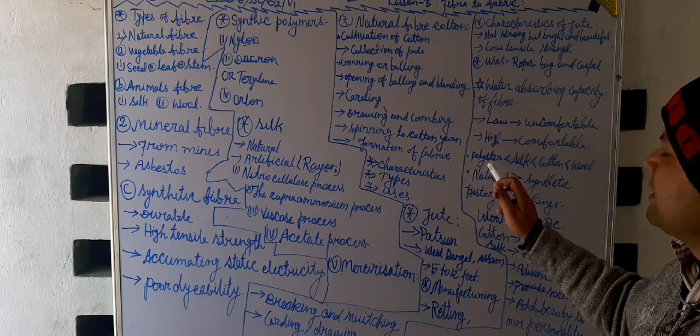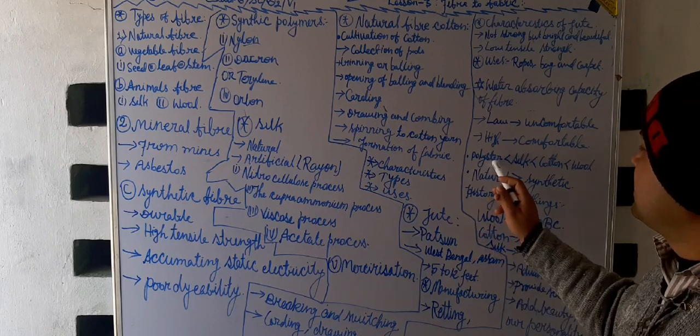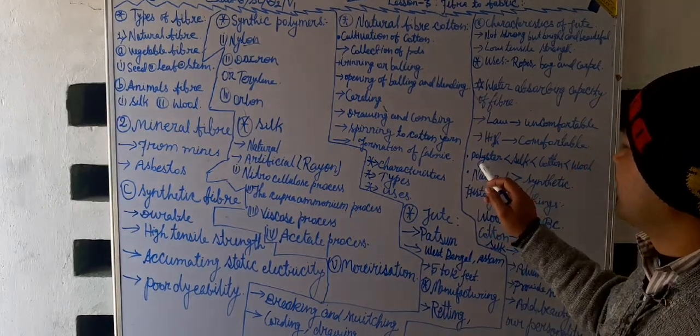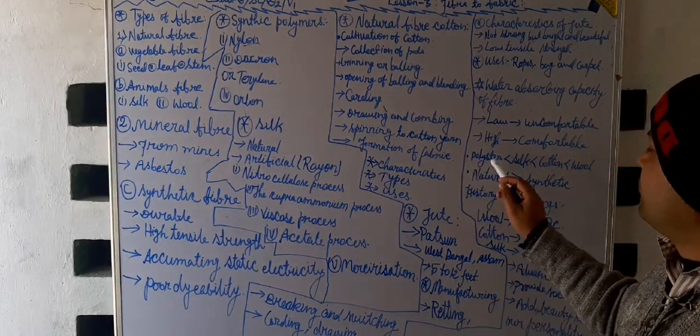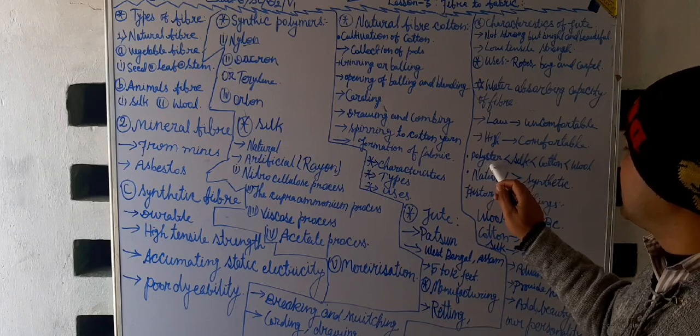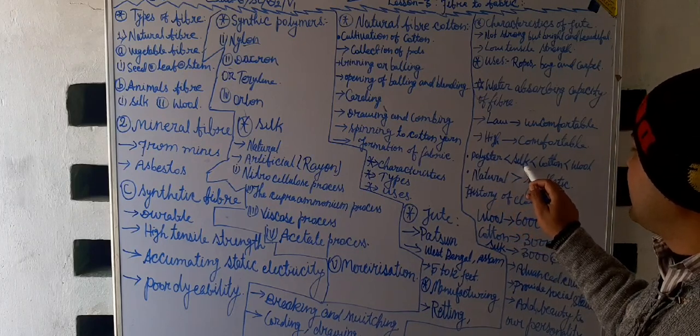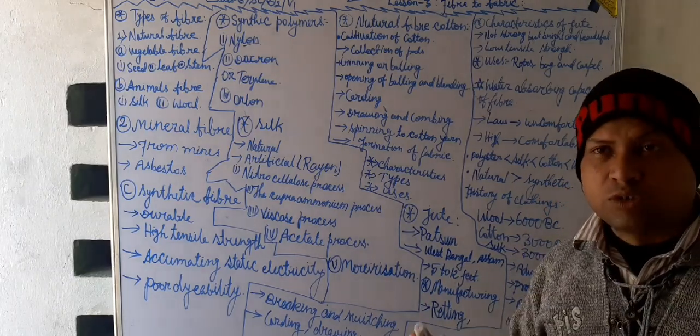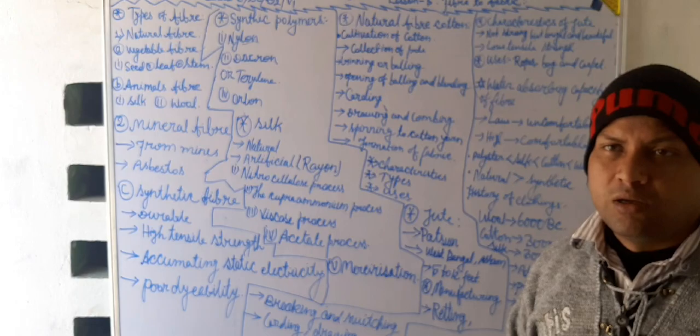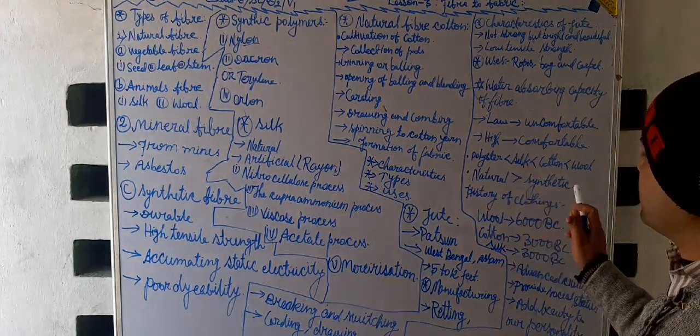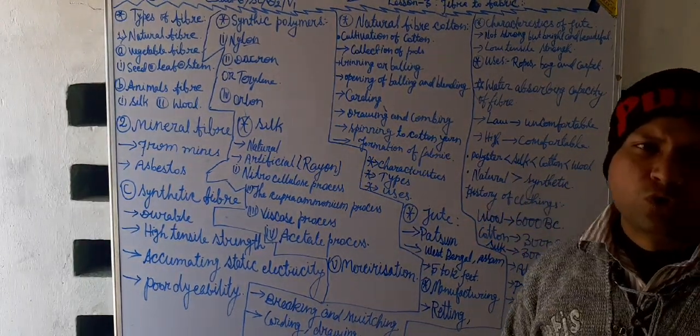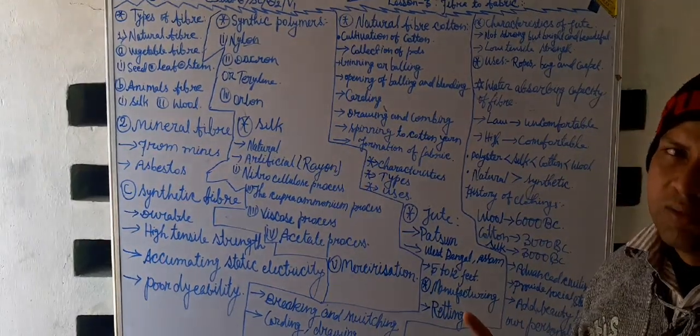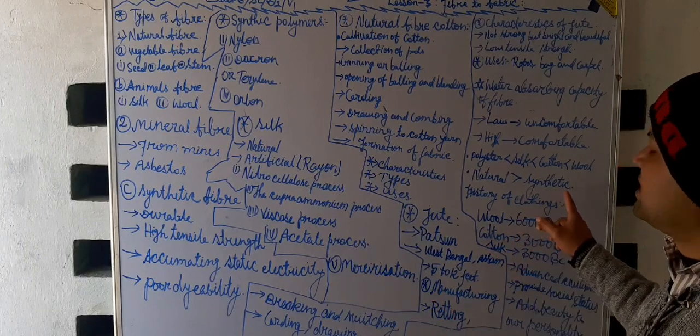First, in increasing water absorbing capacity, in the lowest position here we have polyesters. After that silk. After that cotton. And wool have the most water absorbing capacity in this row. And one thing you should remember, natural fibers have greater water absorbing capacity than synthetic fibers. So we should use natural cloths for wearing rather than synthetic cloths.